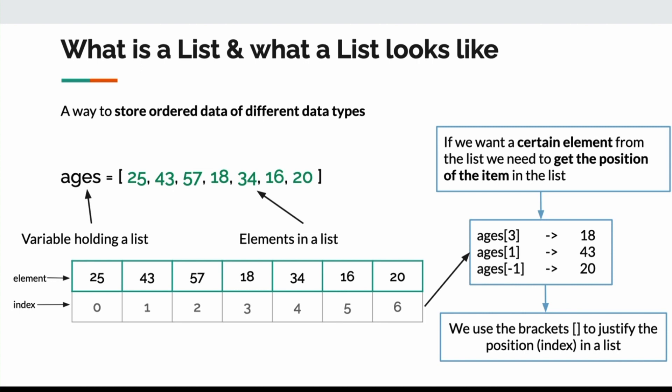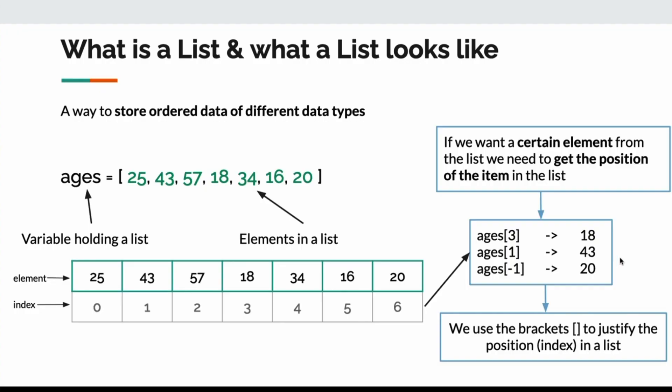If we want to obtain an item from a list, I take the list name ages, use the square brackets, and inside I put the index or position. So if I say ages at index three, that results in 18. If I want to get the very last element in any list, I can just say negative one, and no matter how long the list is, it's going to go to the last element and get that out.